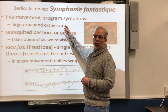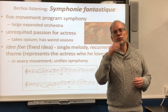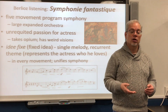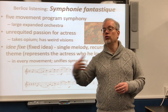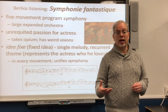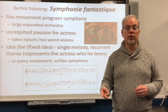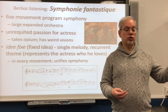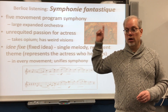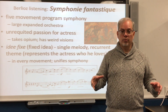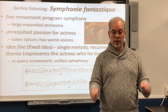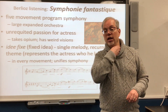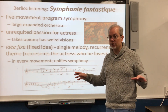Berlioz wrote for a huge orchestra, much larger than others were writing for at the time. This piece was written in 1830, just three years after Beethoven's death. He wrote for two low brass instruments called ophicleides, today played by tubas — two tubas, which no one had done before. He wrote for four trumpets and included two harps in the orchestra, which no one had done before. In the classical orchestra the percussion section was just one person playing two timpani, but Berlioz wrote for eight timpani played by two different players, with actual chords being played on the timpani. No one had ever done anything like this before.